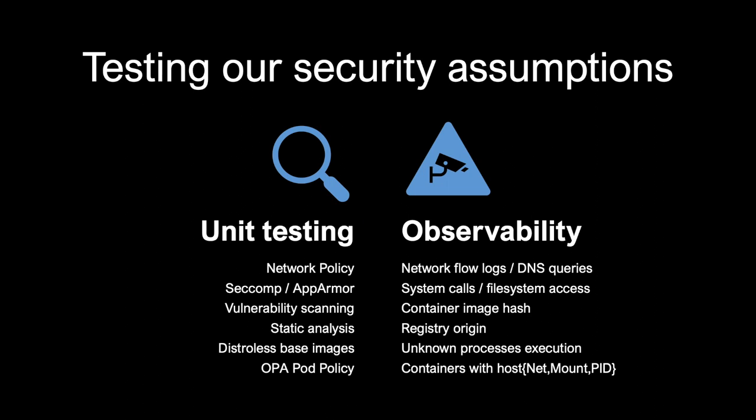We want to test our security assumptions and measure whether the protections we're applying are suitable for the threats we actually detect within our environment. DevSecOps integrates security into DevOps, and DevOps writes tests for code — for example, unit testing, which ensures that the behavior of a system is understood. Observability continually validates this behavior. If you have security controls applied, for example a network policy, do you have the observability — via network flow logs or DNS queries — to verify that the network policy is suitable for the protections needed? Capturing system calls and file system access from a container can validate the efficacy of our Seccomp and AppArmor profiles. These measurements can continually inform us whether the protections we're utilizing are sufficient based on the attacks identified in our environment.